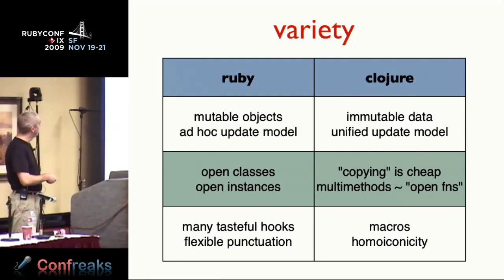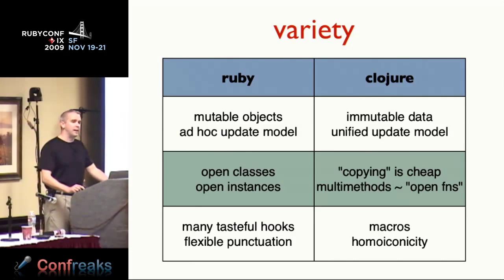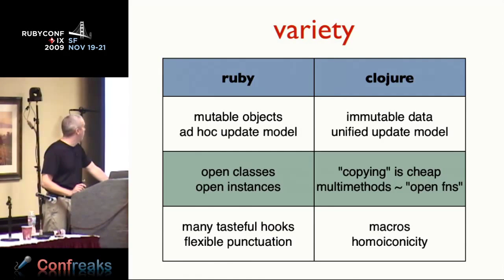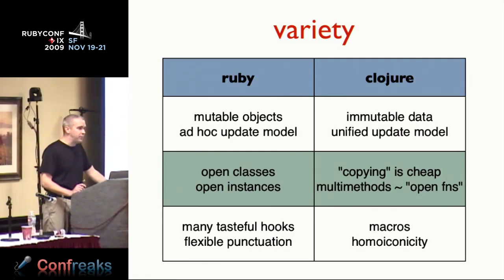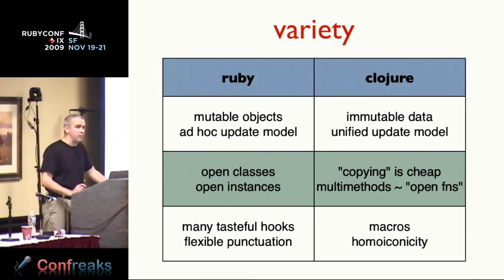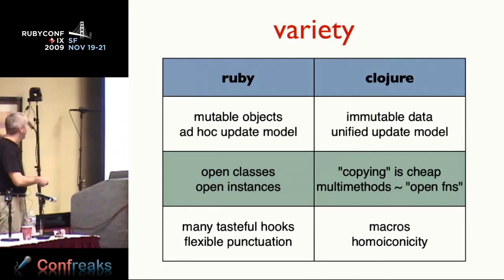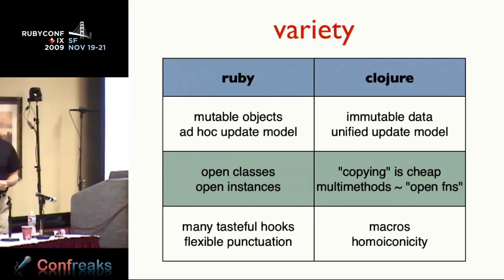The one killer thing: if Rich Hickey and people thinking like him are correct, then five or ten years from now, immutable data and the unified update model will be standard in all mainstream programming languages. This is the reason it's important to be learning Clojure right now. I think he's right. I came for the Lisp and stayed for the functional. That's a super important piece and a reason why Clojure really deserves to be at the top of the list.